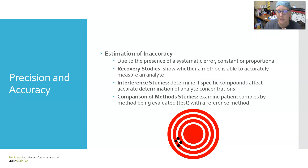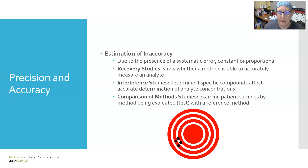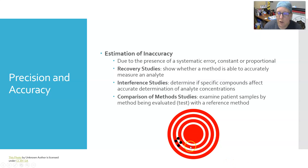Lipemia — excess fats in the sample — and icteria — excess bilirubin causing color change in the serum — are other interferences evaluated in interference studies. Method comparison studies examine patient samples tested by the method being evaluated versus a reference method or another analyzer. In the target diagram, a method can be precise because points are close together but inaccurate because they are off center.